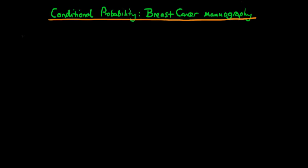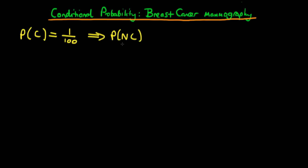These figures are relatively accurate. The probability that a 40 to 50 year old woman chosen at random from the population actually has breast cancer is something like 1 over 100. This implies that the probability that a woman chosen from this population does not have cancer is therefore 99 out of 100, so 99%.